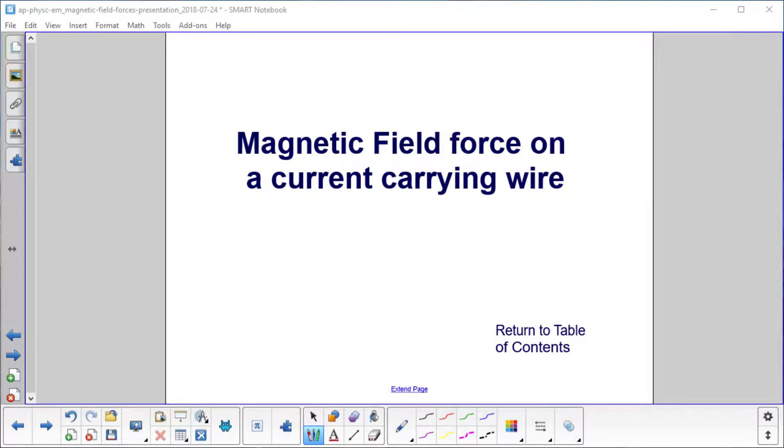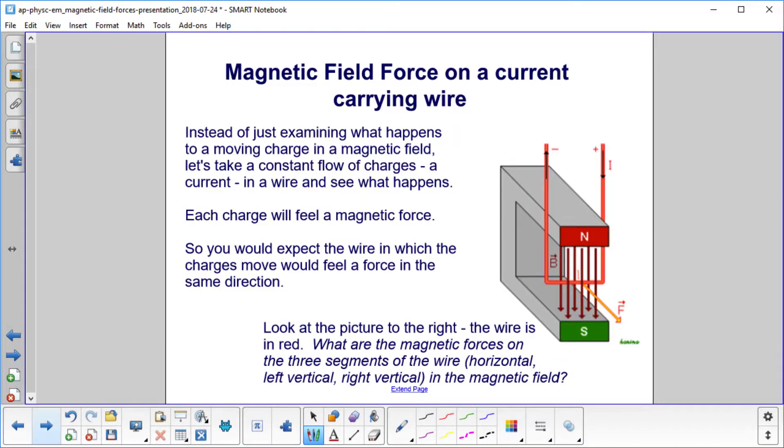Magnetic field force on a current-carrying wire. Instead of just examining what happens to a moving charge, let's take a constant flow of charges - a current - in a wire and see what happens. Each charge will feel a magnetic force, so you would expect the wire in which the charges move would also feel a force in the same direction.